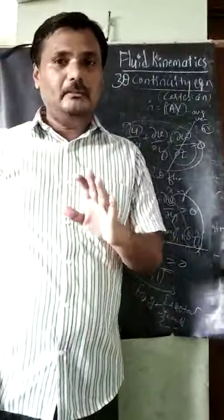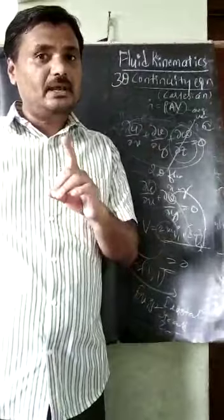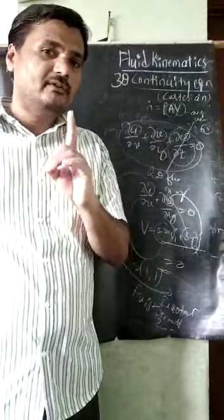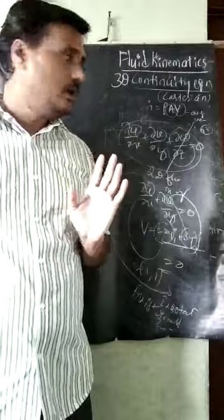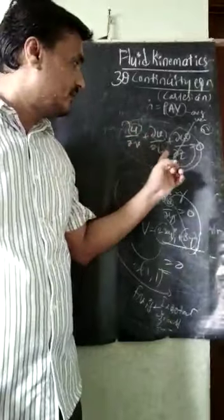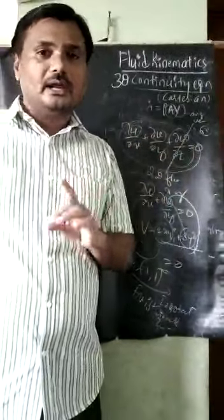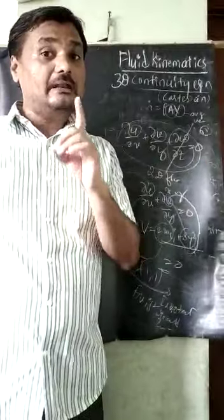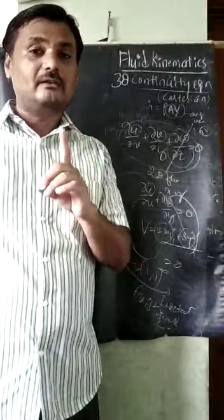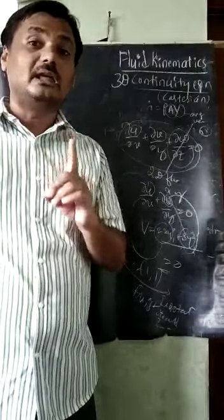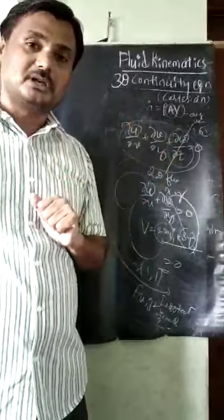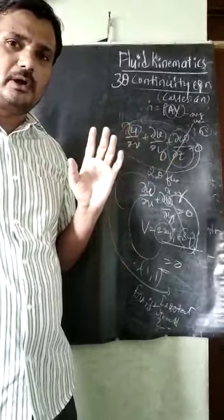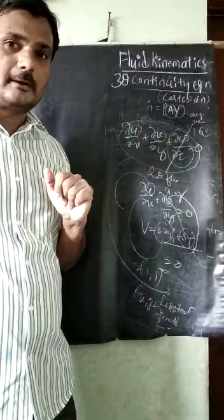This checking is very important. Mathematically, we are checking whether the fluid flow exists or not. After the differentiation, if it comes to 0, it indicates that the fluid is existing, irrotational, steady, and incompressible. This is a very important turning point — we can check this mathematically.